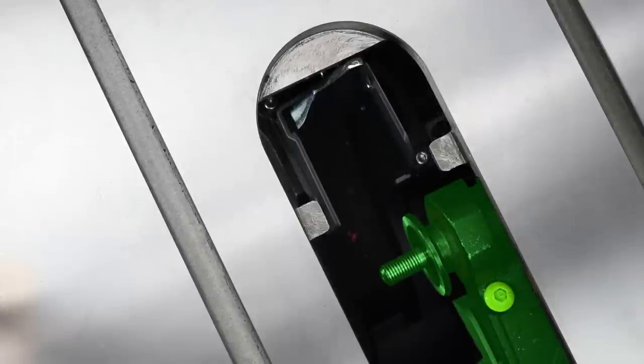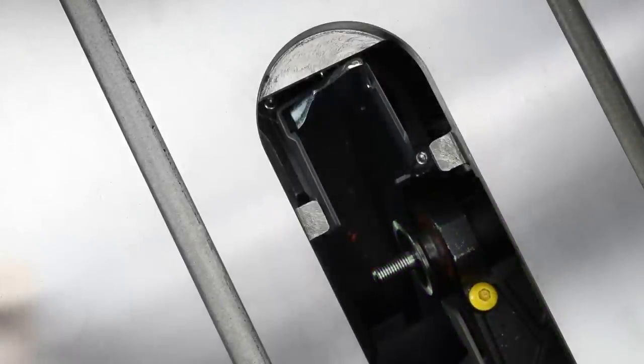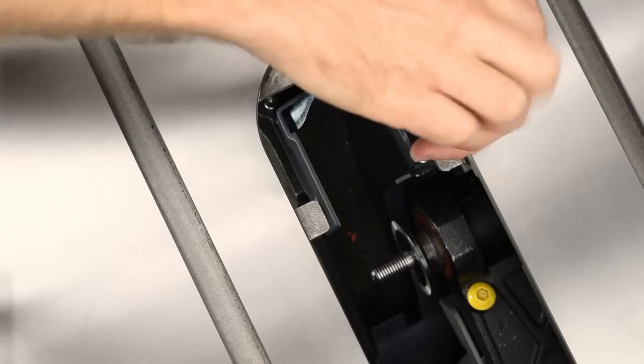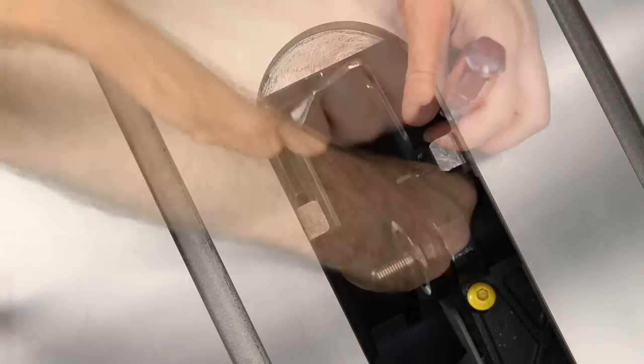For better access to the two cap screws that secure the dust shroud, lower the arbor. Use a 5mm ball end hex driver to remove the cap screws.